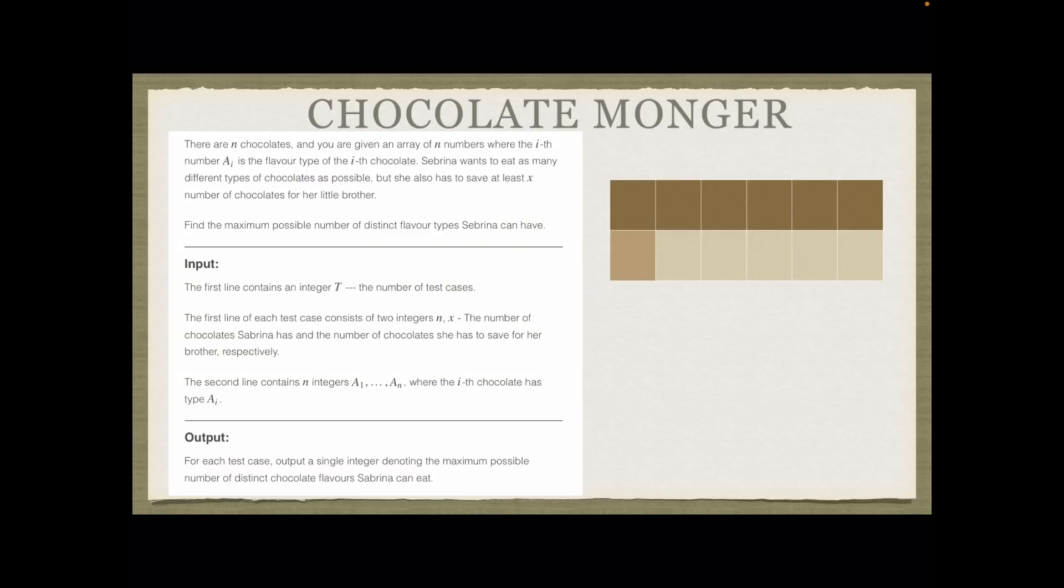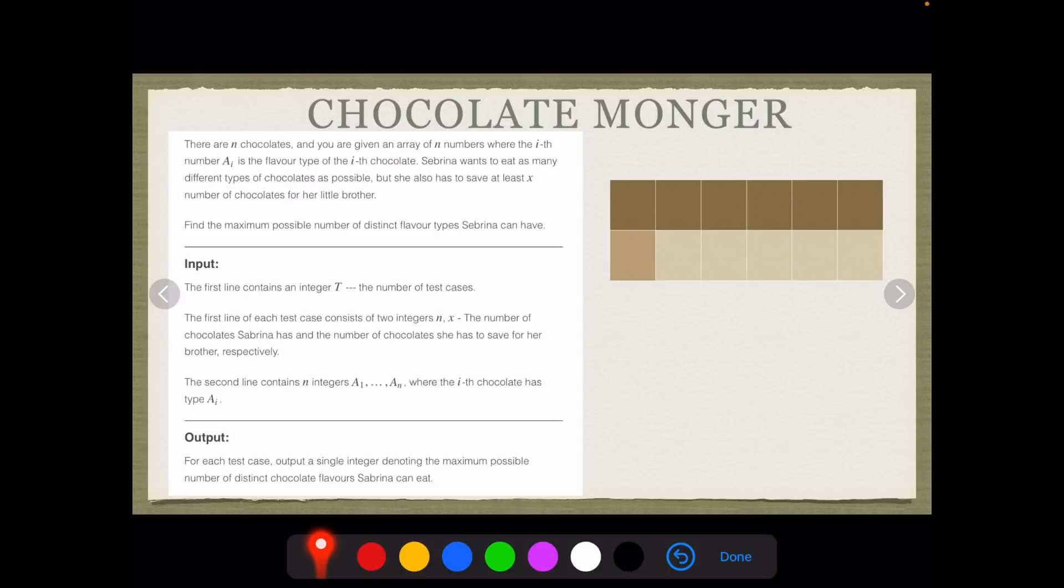Chocolate Monger: There are N chocolates, and you are given an array of N numbers where the i-th number A_i is the flavor type of the i-th chocolate. Sabrina wants to eat as many different types of chocolates as possible, but she also has to save at least X number of chocolates for her little brother. So there are a few things given for us. One is N - N is the number of chocolates that we have.